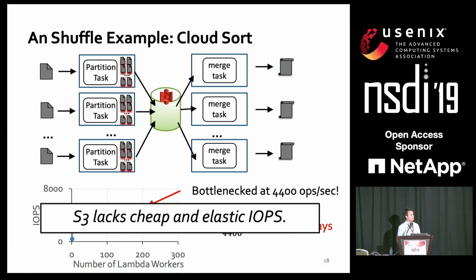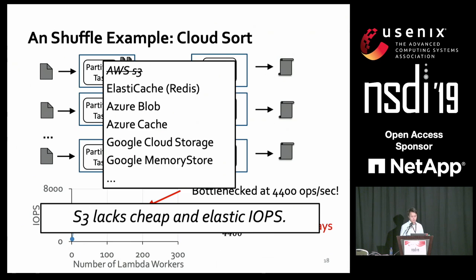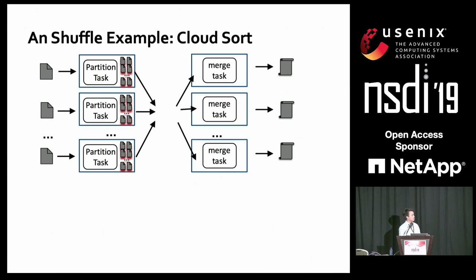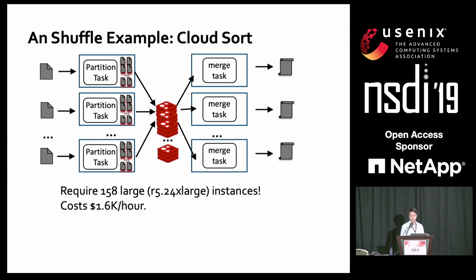A natural alternative is ElastiCache, since memory-based cache systems provide very high IOPS. We tried replacing S3 with Redis, but found that to store all 100 terabytes, even using the largest Redis instance available on AWS (R5 24xlarge), we need 158 instances — costing $1,600 per hour just for capacity. Even if we could beat the CloudSort shuffle time, we would cost 10 times more for storage alone.